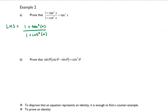Both of these things can be rewritten using various forms of the Pythagorean identity. The numerator, 1 plus tangent squared x, is the same thing as secant squared x, and 1 plus cotangent squared x is the same thing as cosecant squared x — and we get there using the Pythagorean identities.